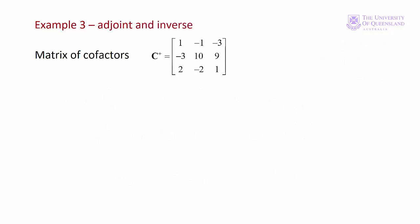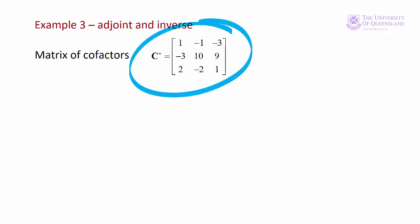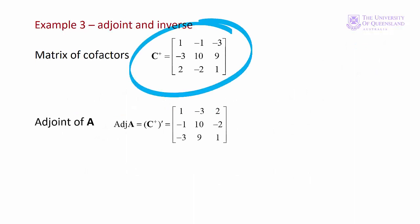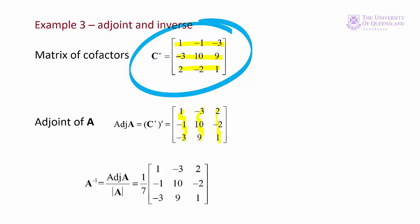Here we've put all our cofactors into a matrix, C plus. We take the transpose, so the rows become the columns of the transpose, and then we have the adjoint. To find the inverse we multiply the adjoint by 1 over the determinant. Rather than dividing each element by 7, we can leave the inverse in this form — it's often simpler to use when solving the system of equations.